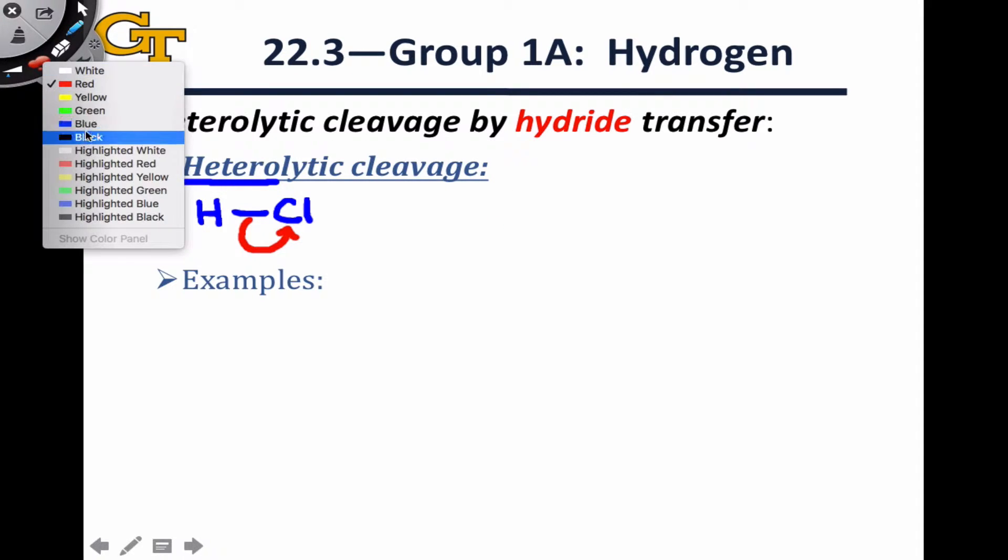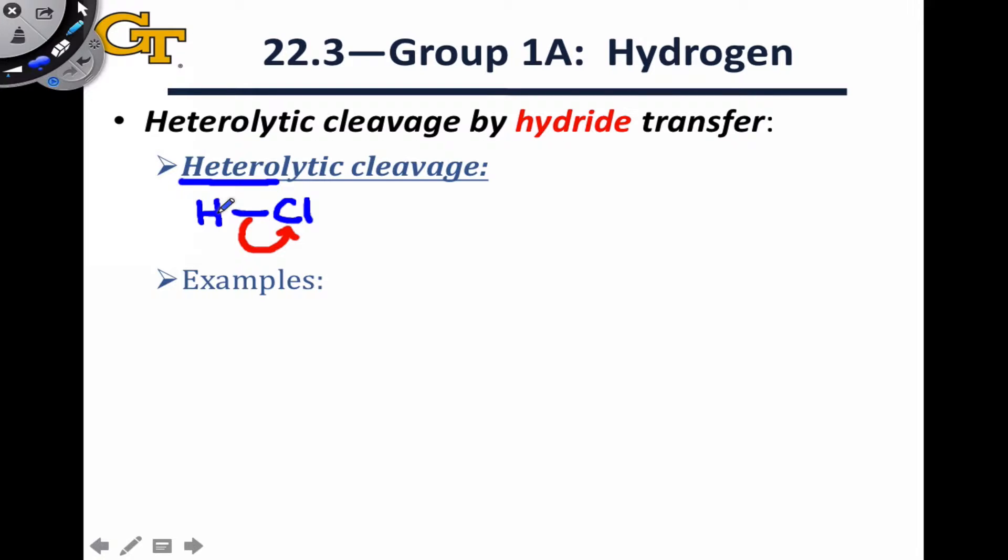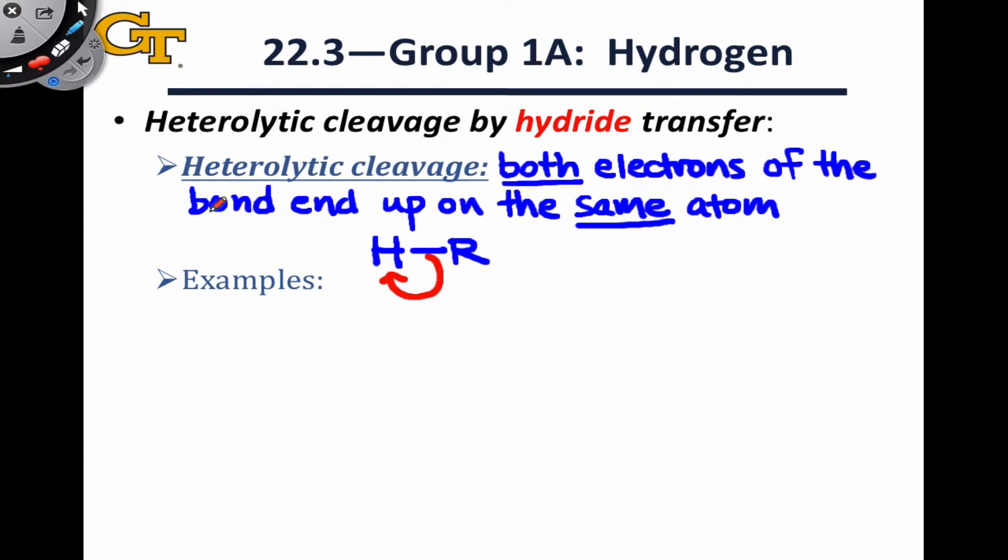Heterolytic cleavage can happen in two ways in hydrogen compounds. It can either happen such that the hydrogen is left without electrons, in other words, it's left as H+, or it can happen such that the hydrogen gains both electrons, and the other fragment is left without electrons. In heterolytic cleavage via hydride transfer, it's this second situation that takes place. This happens for hydrides in which the bond between hydrogen and the other partner is polarized towards the hydrogen so that there's more electron density on the hydrogen atom. Thus, it's able to be donated as a hydride, and it prefers to do this instead of being donated as a proton.